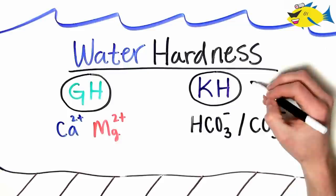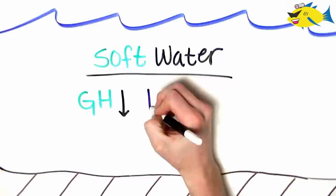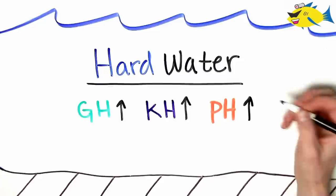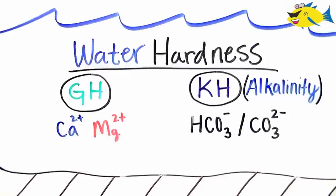Soft water refers to aquarium water with low GH and KH, as well as lower pH. Hard water is the opposite, with high GH and KH, and therefore a higher pH. Most of the time in natural environments, GH, KH, and pH are all commonly linked,